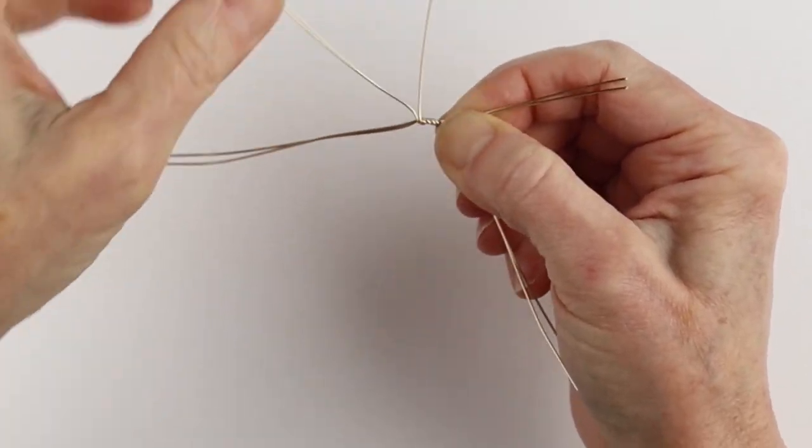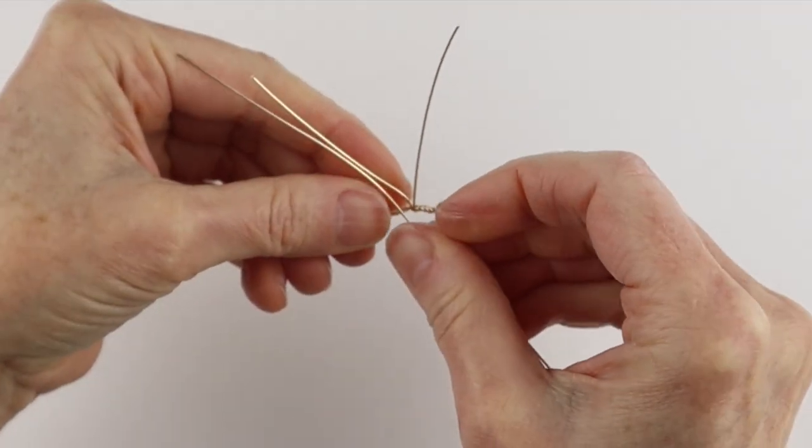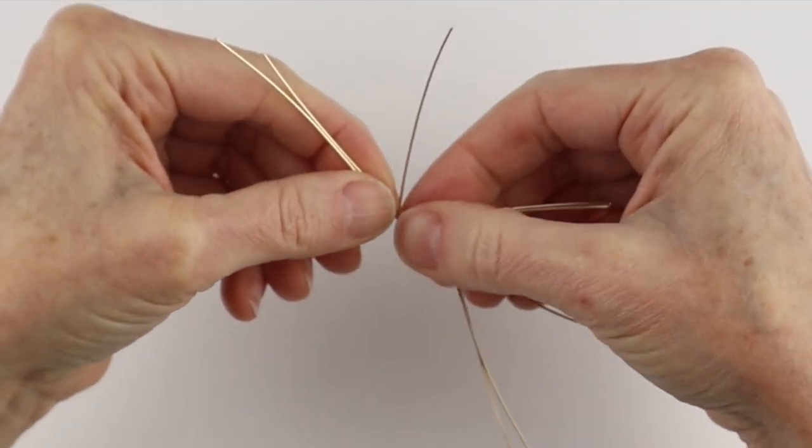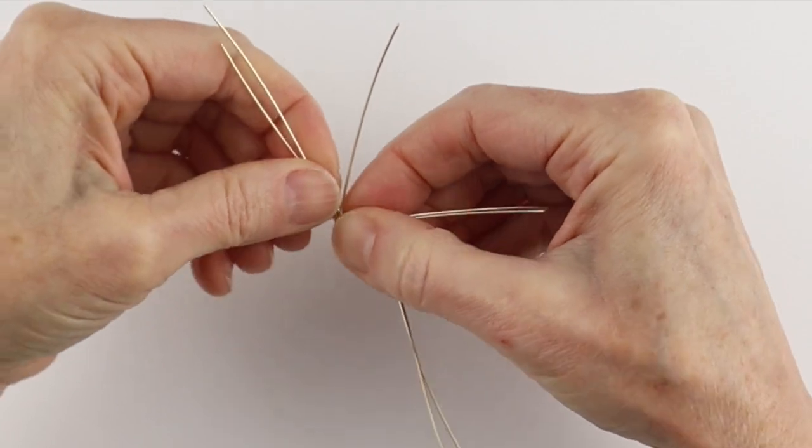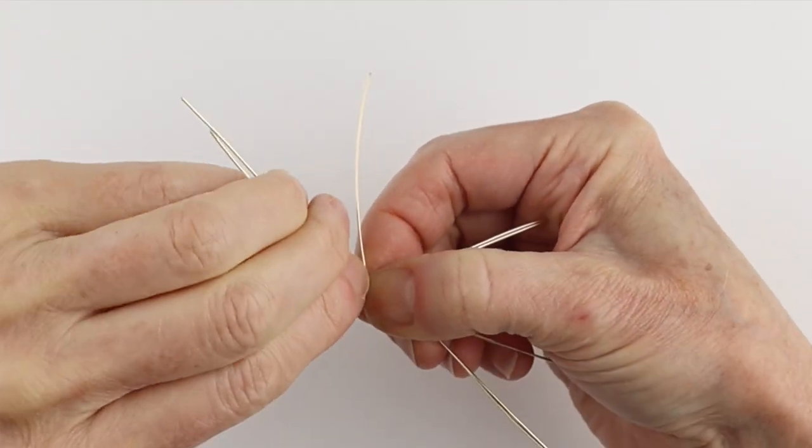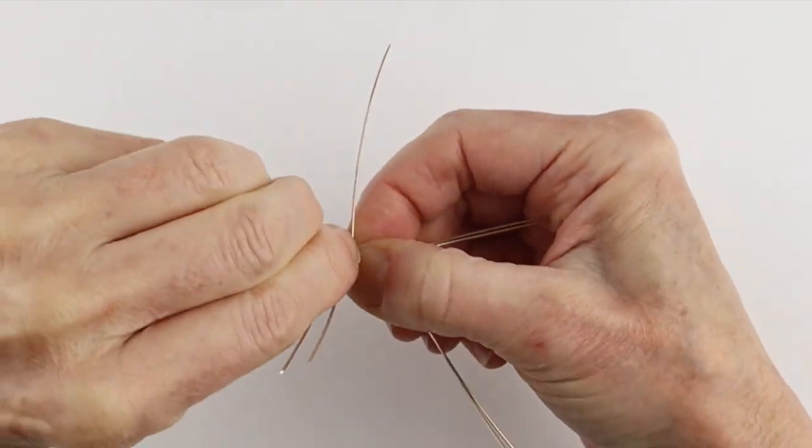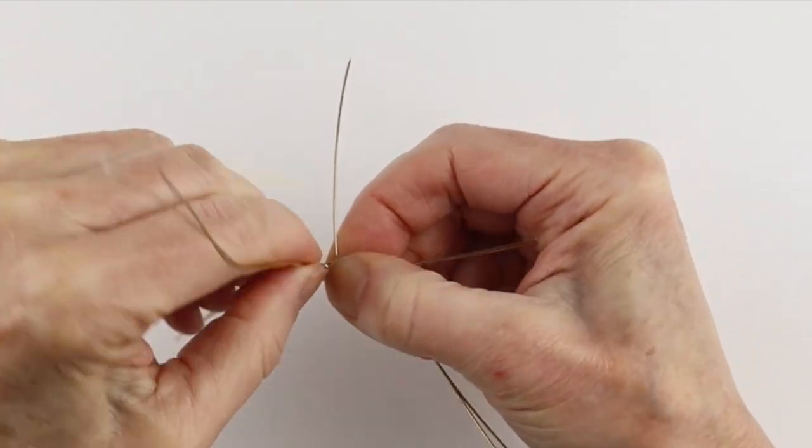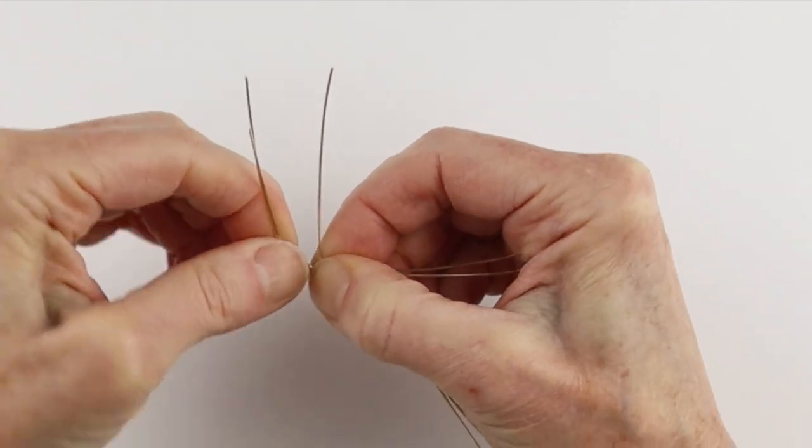And then we're going to separate these, add another wire, one more wire there, and then we're going to twist again, always having the two long ones going up. So now we're going to go one, two, three, make sure those go up.